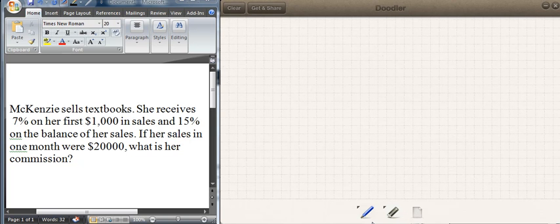Okay, here's problem number two. McKenzie sells textbooks. She receives 7% on her first $1,000 in sales and 15% on the balance of her sales. If her sales in one month were $20,000, what is her commission? Well, we just break it down.